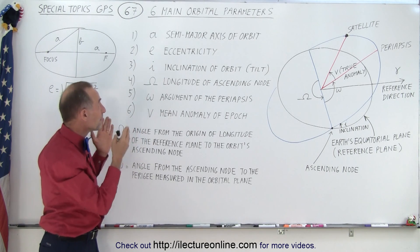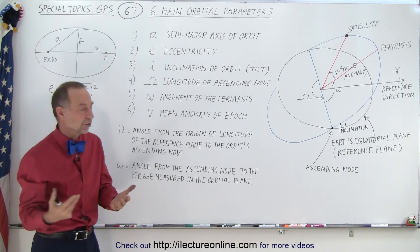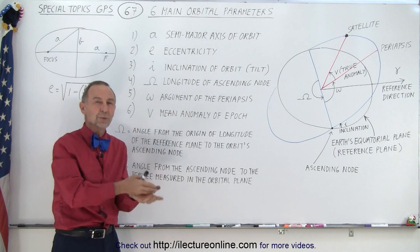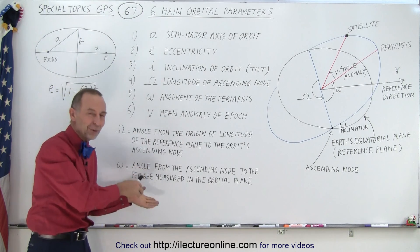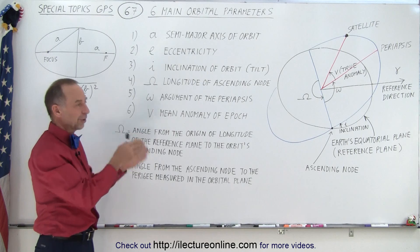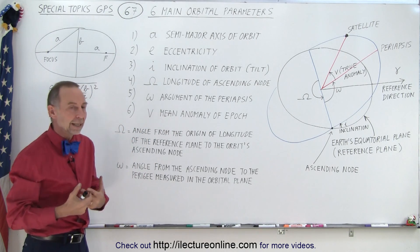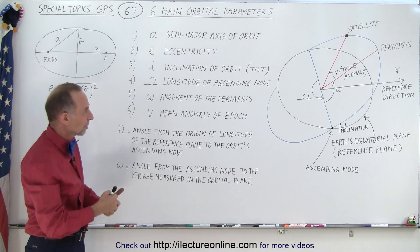So those are the six main orbital parameters, which will be, they're very common in GPS, and obviously those appear in Word 2 and Word 3, not Word 2, but the subframe 2 and the subframe 3, I keep saying Word, subframe 2 and subframe 3, where we have a lot of the ephemeris data coming in on the regular interval from the satellite to the receiver on the ground,